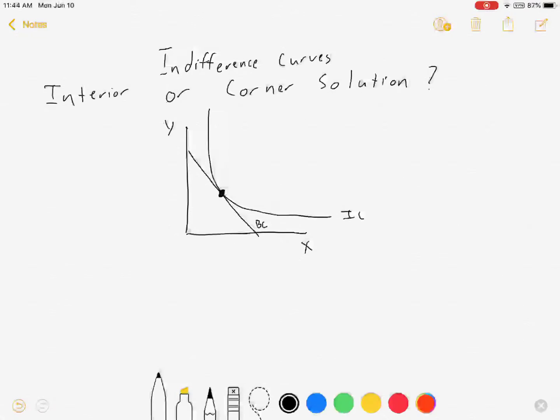Where the slope of the indifference curve equals the budget constraint, the slope of the indifference curve is marginal rate of substitution, and it is equal to minus px over py.